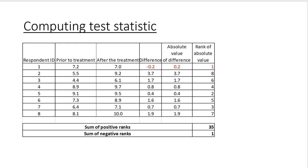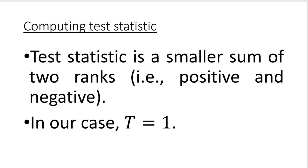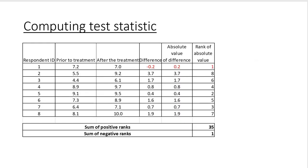Next, calculate the absolute value of each difference and rank those absolute values. Finally, calculate the sum of positive ranks and the sum of negative ranks. We have only one negative difference, and it is the smallest one, so the sum of negative ranks is 1 and the sum of positive ranks is 35. For a two-tailed test, the test statistic is the smaller of the two rank sums, so in our case the test statistic T equals 1.